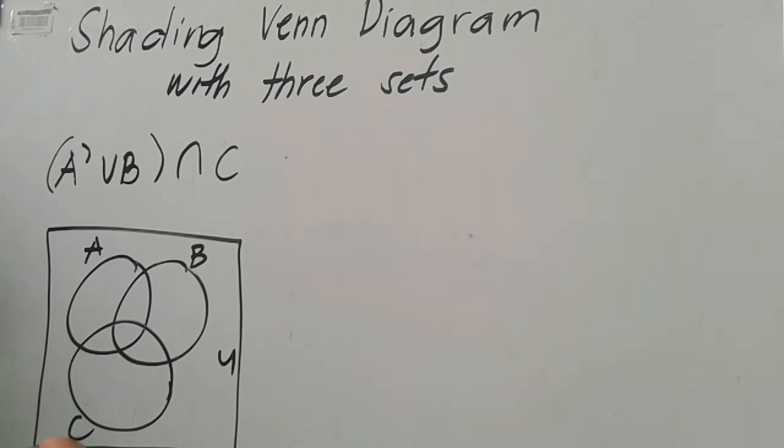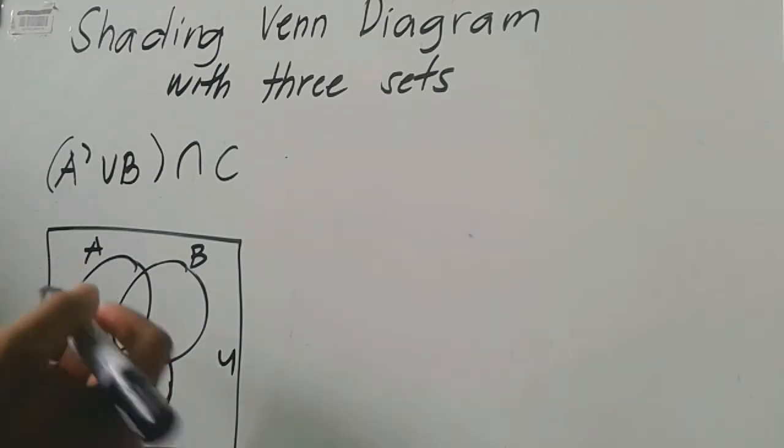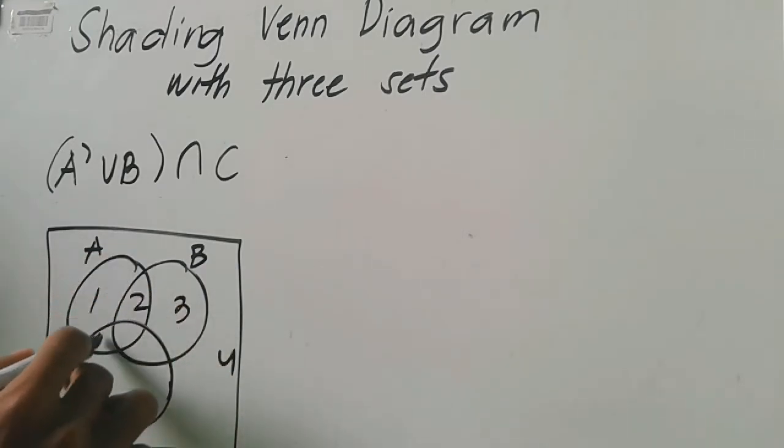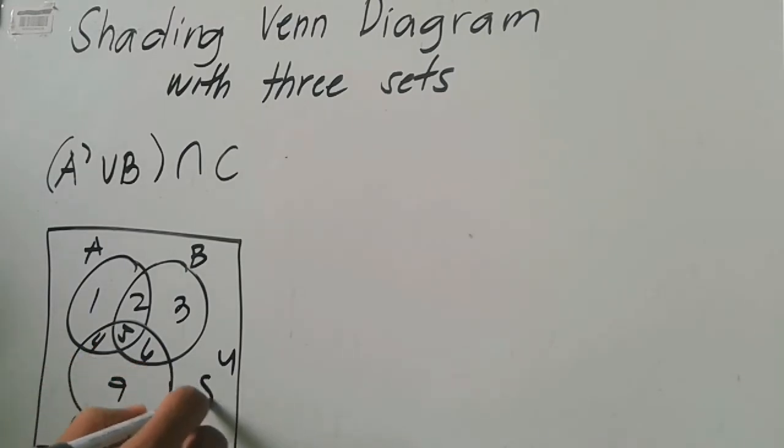So suppose meron naman tayong itong A complement union B, or quantity A complement union B intersection C. Pinakamadali nito is pwede natin gawaan ng number, or mag-assign tayo ng mga numbers ng bawat region ng Venn diagram. Assuming this is region one, region two, region three, four, five, six, seven, and sa labas is eight.